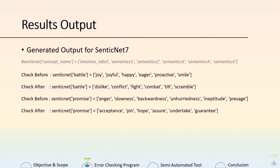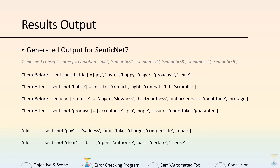Another example is 'promise'. It was tagged under the emotion label of anger — which is more negative — with semantics like slowness and backwardness. From our results, it was suggested that it should be tagged more positively, under the emotion label of acceptance, with semantics like hope, assure, and guarantee. In the case where a new concept is found, we add it to the knowledge base. For example, the concept 'pay and clear' was not found in the existing knowledge base, so we use information from emotion categorization and the semi-automated tools to get semantic values, then format and add them into the knowledge base.